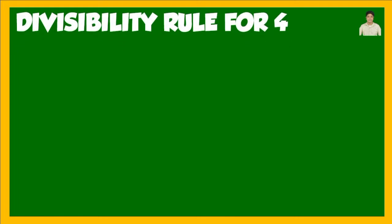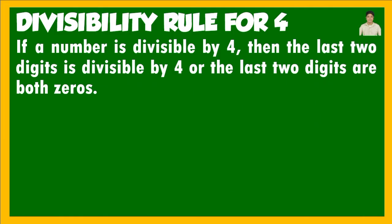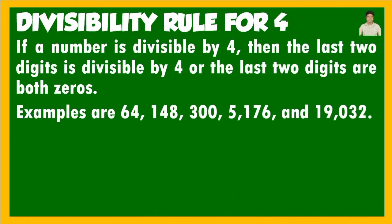Let us start our discussion for the divisibility rule for 4. If a number is divisible by 4, then the last 2 digits is divisible by 4, or the last 2 digits are both zeros. We consider the last 2 digits — not just the last digit. If there are two zeros at the end side by side, the number is automatically divisible by 4. The zeros must be adjacent.